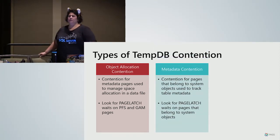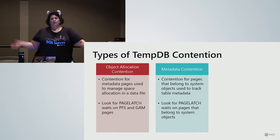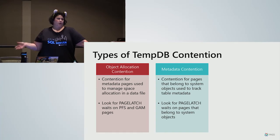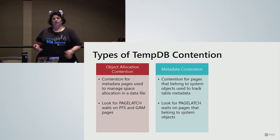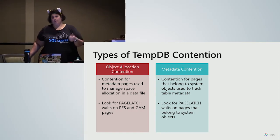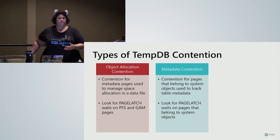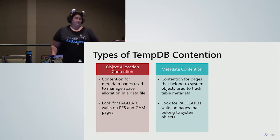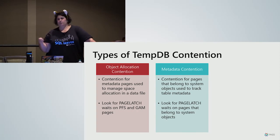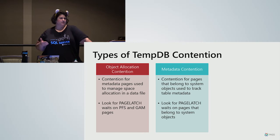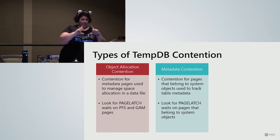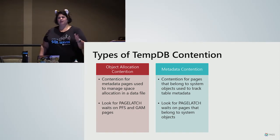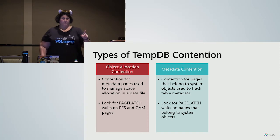We are introducing concurrent updates to PFS pages in 2019, and we made some trace flags like 1118 default behavior, which avoids SGAM pages by doing only full extent allocation. But one thing not addressed by adding multiple files is metadata contention. When you're constantly adding and dropping tables in TempDB, we have to modify metadata for those tables — tracking all objects, indexes, columns, and properties across several metadata tables. Multiple threads adding and dropping objects can cause page latch contention on these metadata pages, and this can't be solved by adding more files.